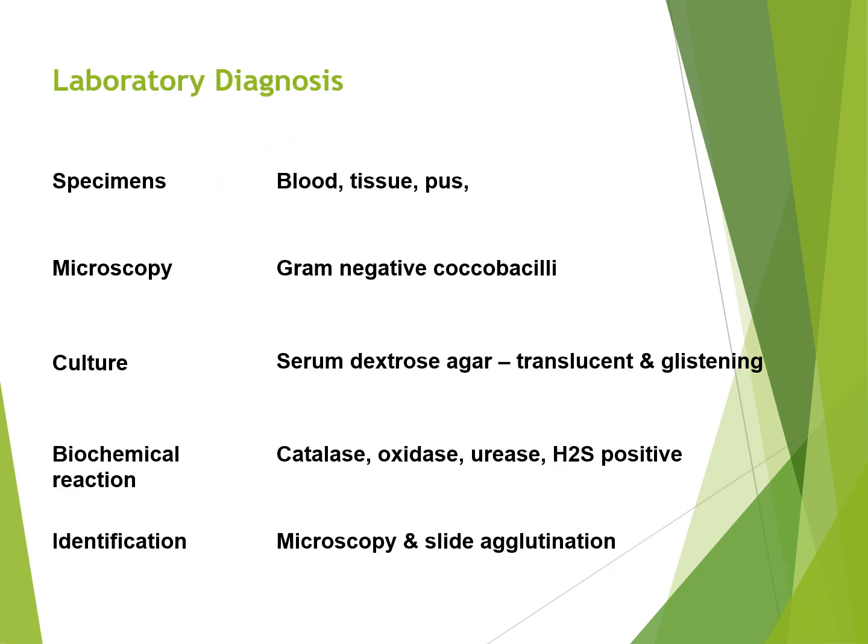For laboratory diagnosis, the specimens needed are blood, tissue, and pus. On microscopy, you will see gram-negative coccobacilli. Culture is performed on serum dextrose agar, producing translucent and glistening colonies. The biochemical reactions are catalase, oxidase, urease, and hydrogen sulphide positive. Identification is via microscopy and slide agglutination.